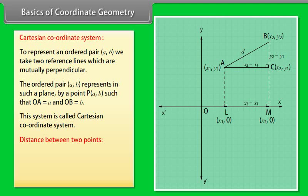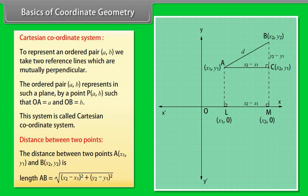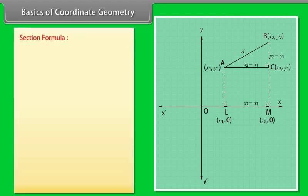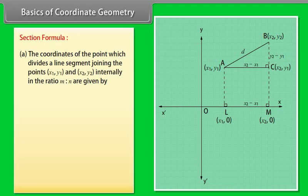Distance between two points: The distance between A(X1, Y1) and B(X2, Y2) is given by the length AB, which is equal to the square root of (X2 minus X1) squared plus (Y2 minus Y1) squared.